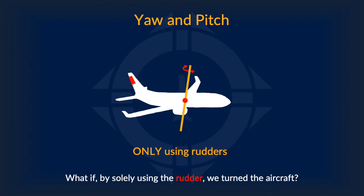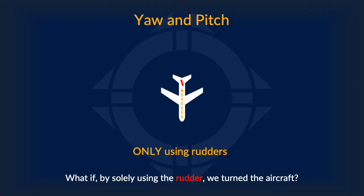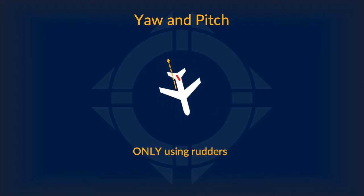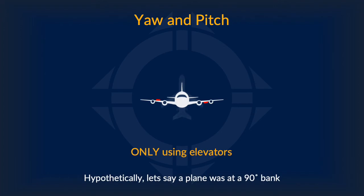Let's start with the first scenario. What if, by solely using the rudders, we turn the aircraft? Theoretically, this would work — it will allow you to turn. However, it is very inefficient and puts a lot of stress on the aircraft, which is not good structurally.